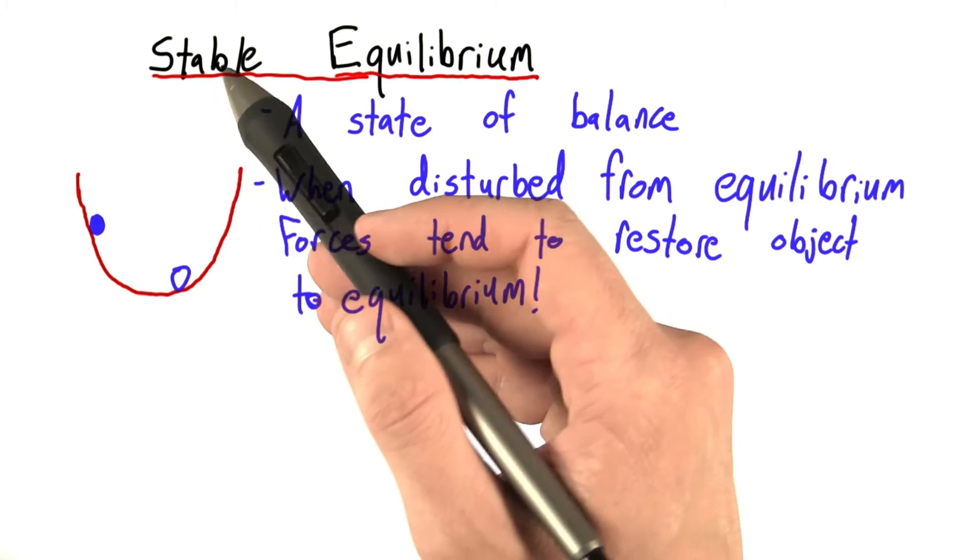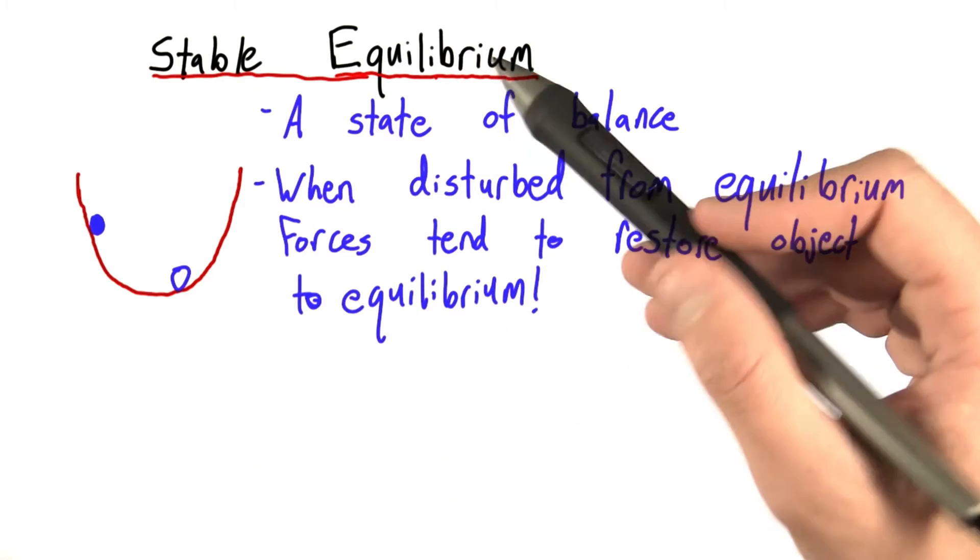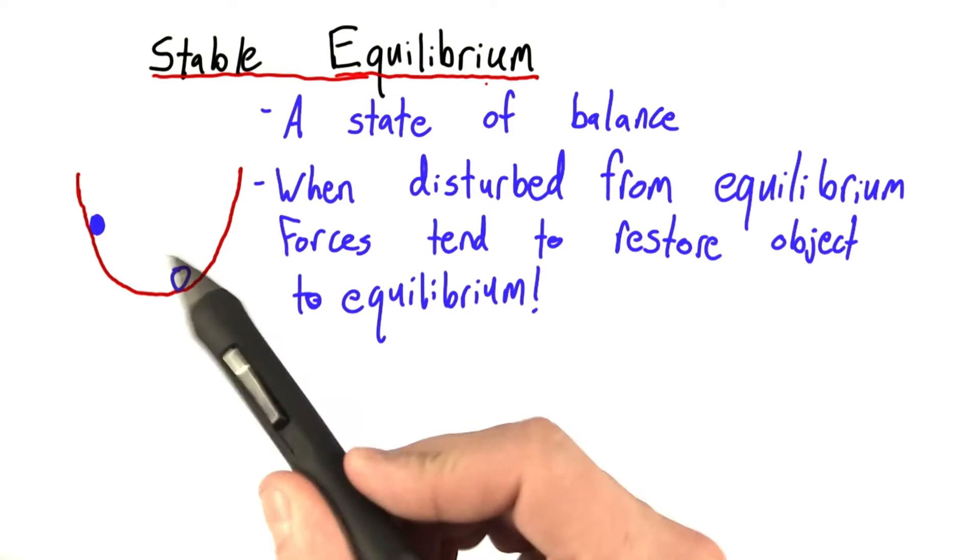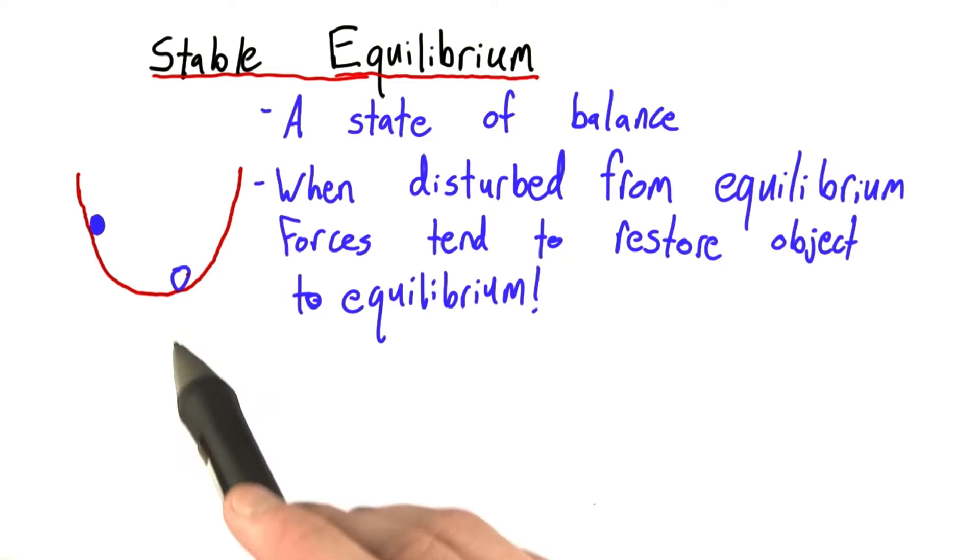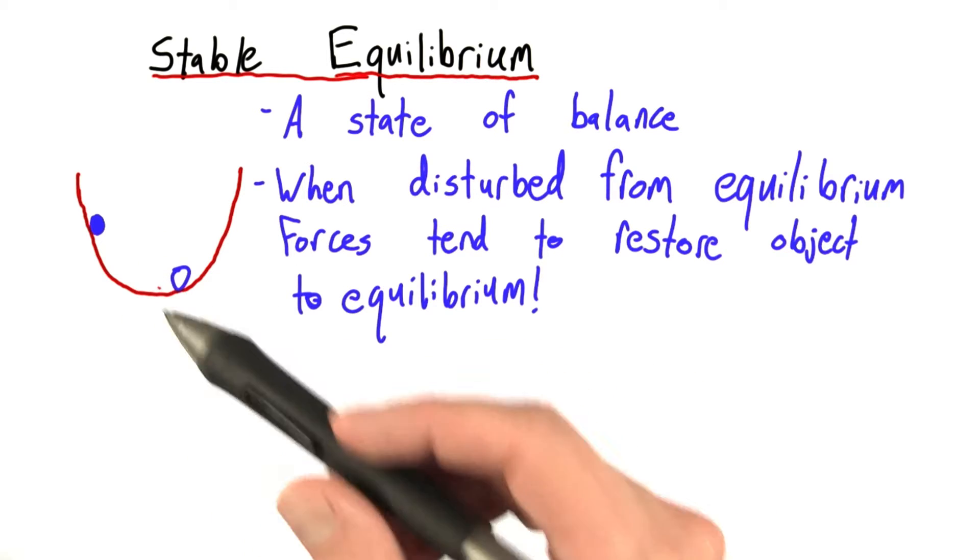There's also semi-stable and unstable equilibrium, but we're not going to talk about those today. Because this is the sort of equilibrium that gives you the simple harmonic motion we need for our chronometer.